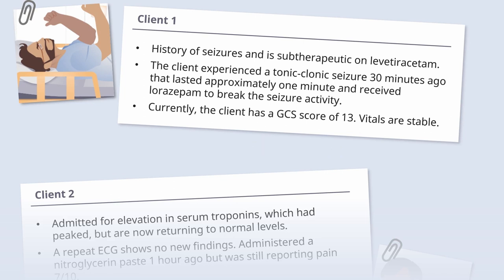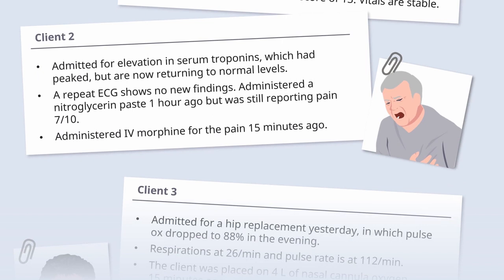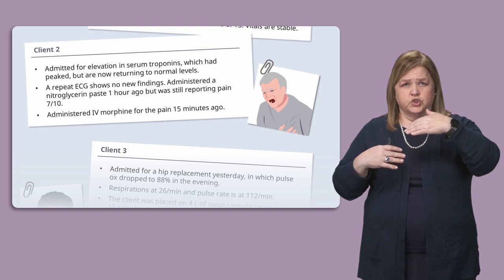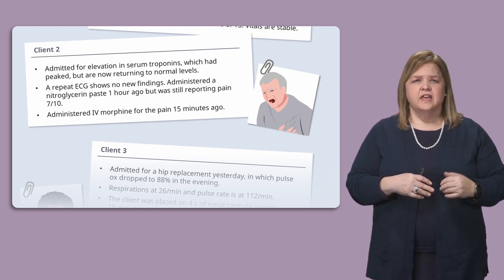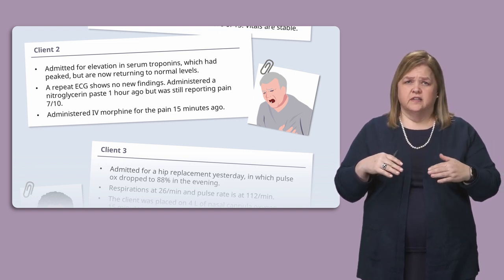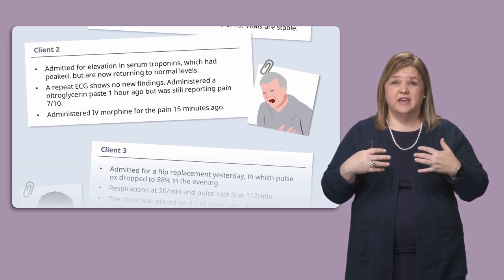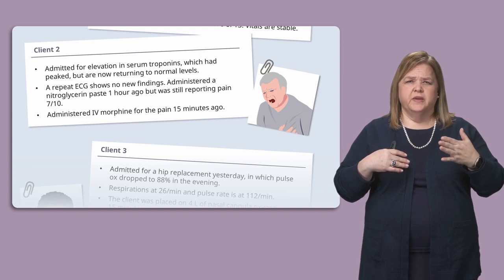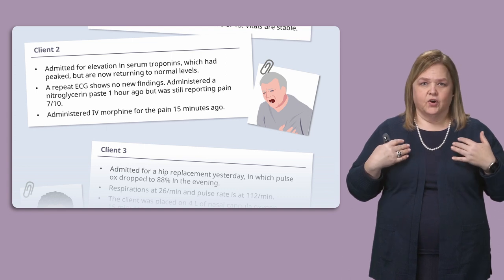Client two was admitted for an elevation in serum troponins. These have peaked and are now trending down — that's a good sign. You did a repeat ECG and there are no new findings. You gave nitroglycerin paste one hour ago, but they're still having pain at seven out of ten. Anybody having heart issues really gets our attention. Comparing client two to client one, I'm already thinking client two is more critical.